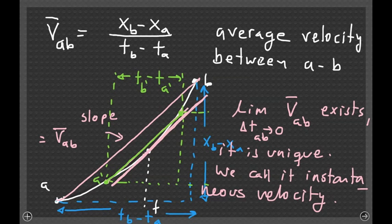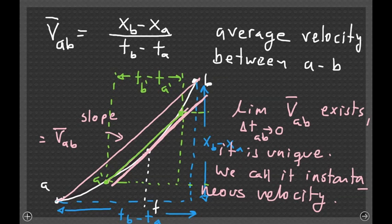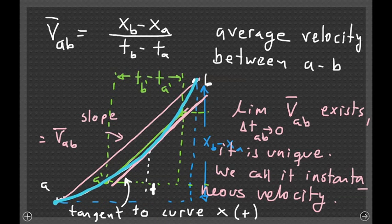We call that unique number the instantaneous velocity at time T. Using the definition of velocity as the slope of the position versus time plot for uniform motion, we've modified that definition to handle a more general class of motions without constant velocity. Using this procedure, we can define the instantaneous velocity at a particular point in time. When you take this procedure to the limit, you end up with a straight line that is tangent to the curve at time T, and the slope of that tangent line is the instantaneous velocity.